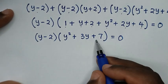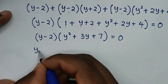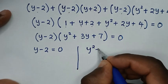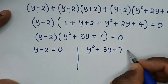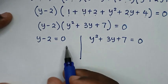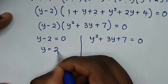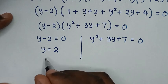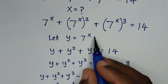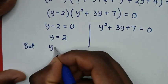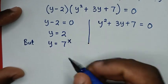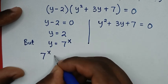From here we have two solutions. The first solution is y minus 2 equals 0, and the second solution is y square plus 3y plus 7 equals 0. From the first solution, taking negative 2 to the other side gives y equals 2. But we need to find x, and we recall that y equals 7 power x. So 7 power x equals 2.